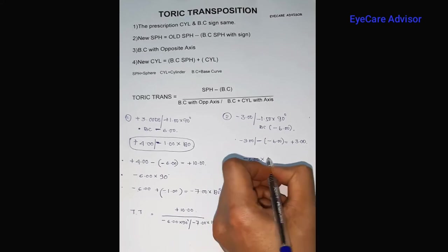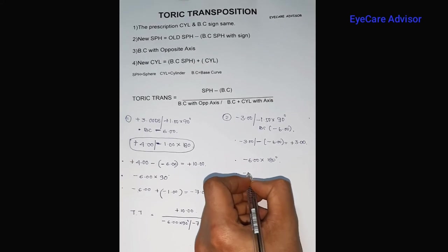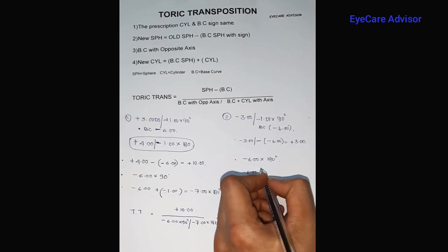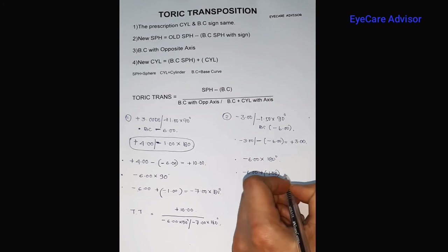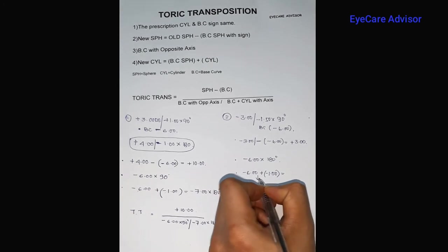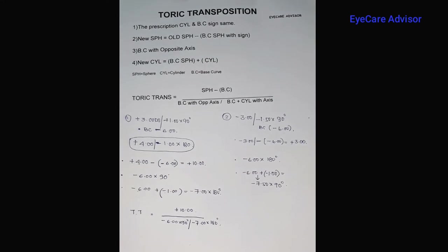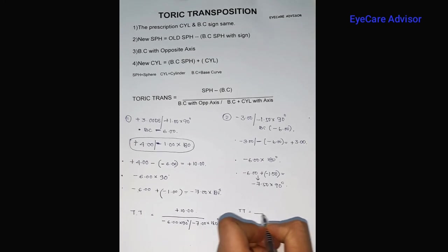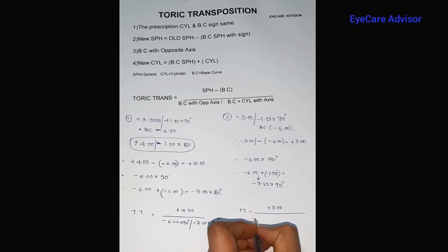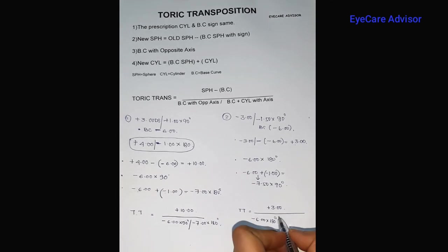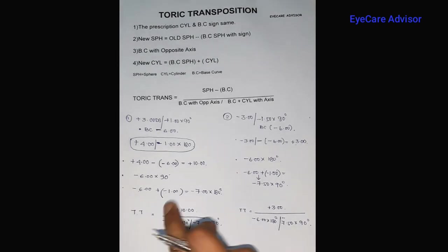For step two, the base curve with opposite axis is minus six at 180 degrees. For step three, the new cylindrical power equals base curve minus six plus the cylinder of minus one point five, giving minus seven point five diopters at 90 degrees. So the toric transposition result for this case is: numerator plus three, denominator minus six at 180 degrees, and minus seven point five at 90 degrees.